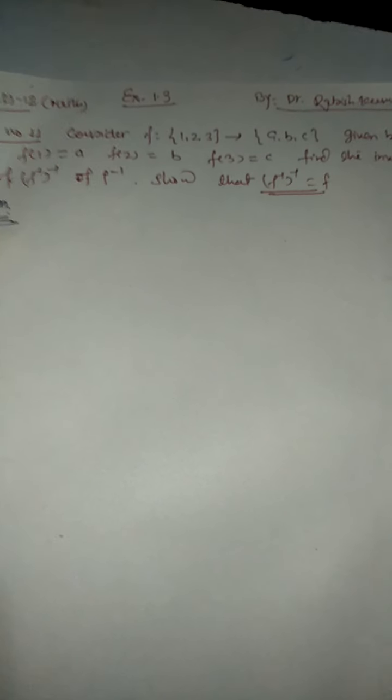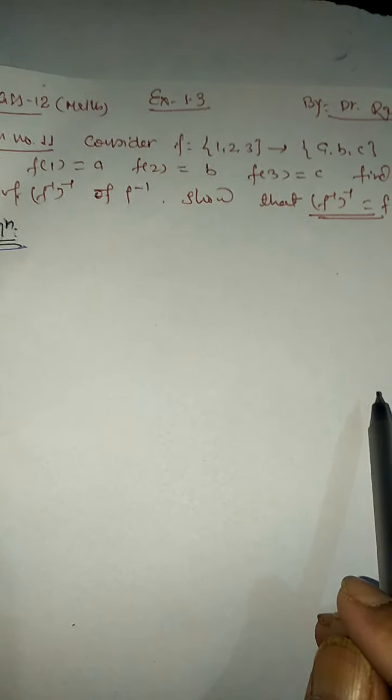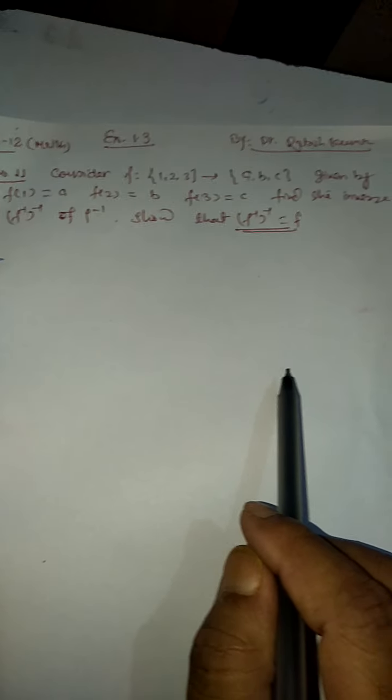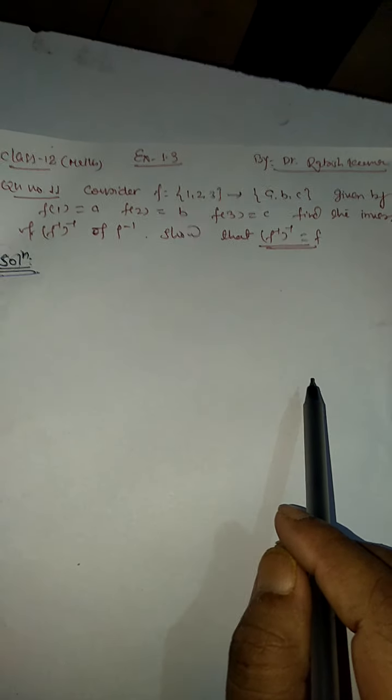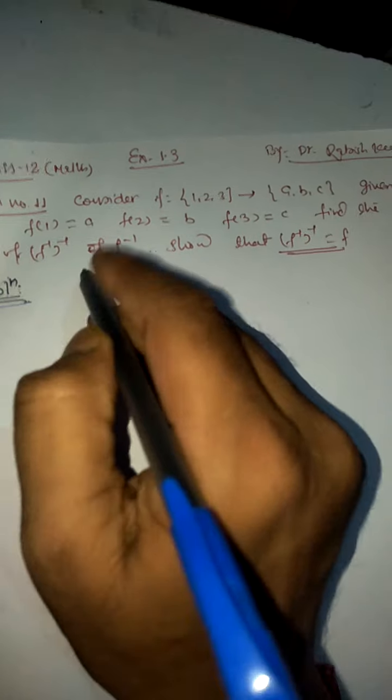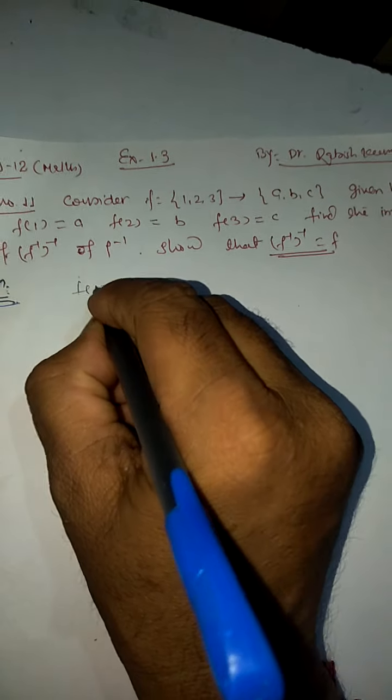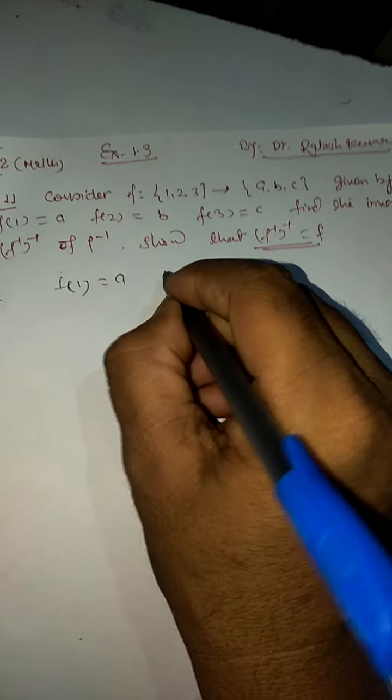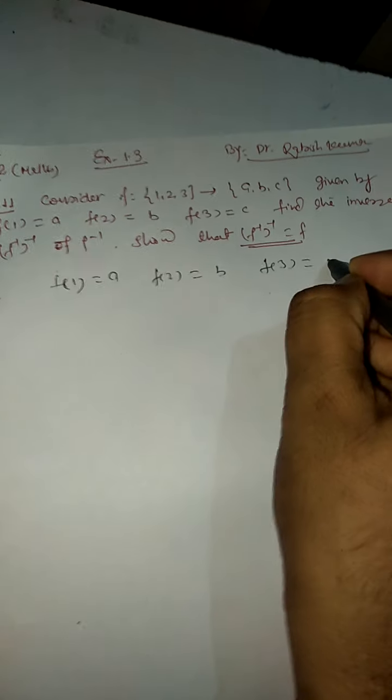Given by f(1) = a, f(2) = b, f(3) = c. To find the inverse of f, we need to find f inverse such that f inverse equals to f. The function we have is f(1) = a, f(2) = b, and f(3) = c.